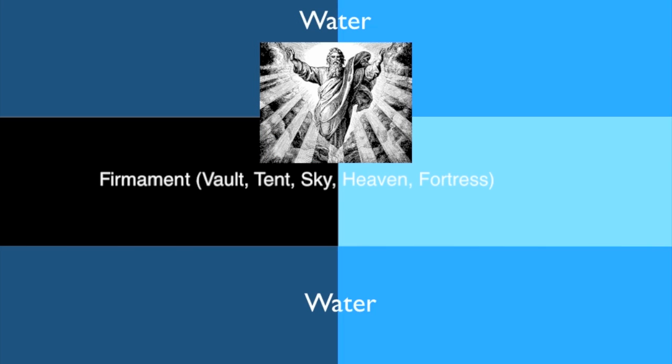Then God said, let there be a firmament in the midst of the waters, and let it divide the waters from the waters. Thus God made the firmament, and divided the waters which were under the firmament from the waters which were above the firmament. And it was so.